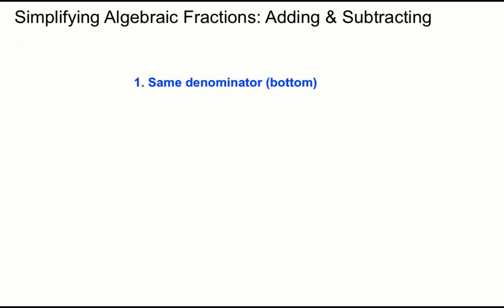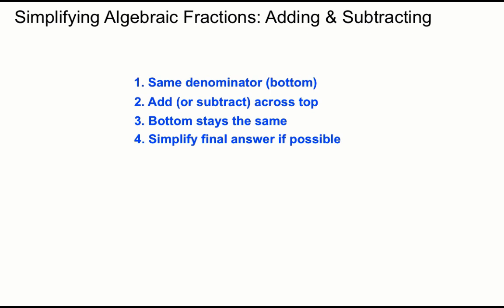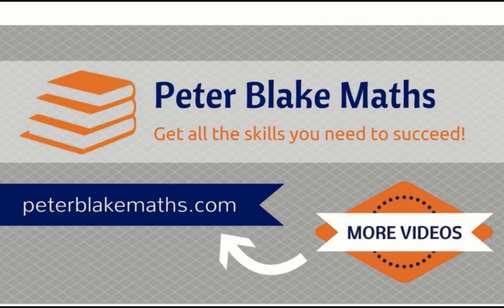Okay, so let's just summarize now. To simplify algebraic fractions by adding and subtracting, we first started off by getting the same denominator. Then we added or subtracted across the top depending on the question. And we kept the bottom the same. And we also looked to simplify any final answers if that was possible. So, a few tricky examples there. I hope they help. And you can replay the video if you're not sure. PeterBlakeMaths.com Thanks for listening. All the best.